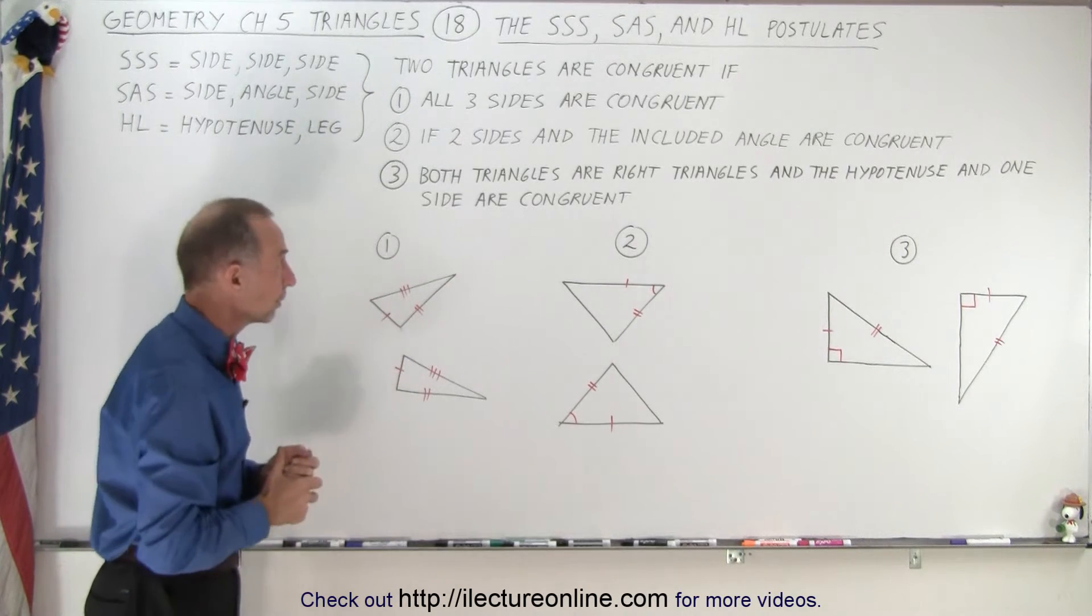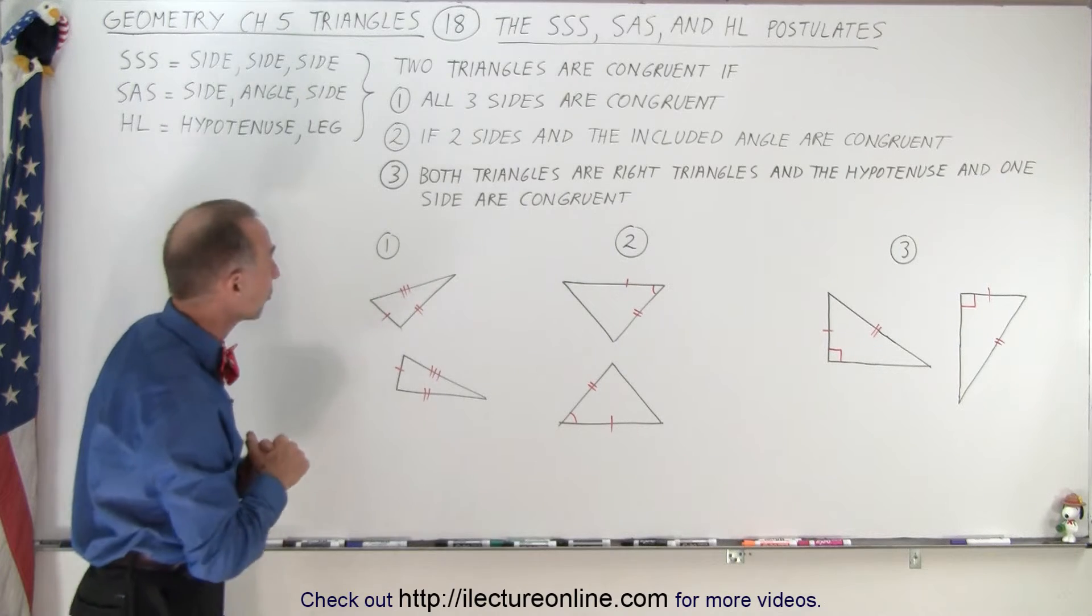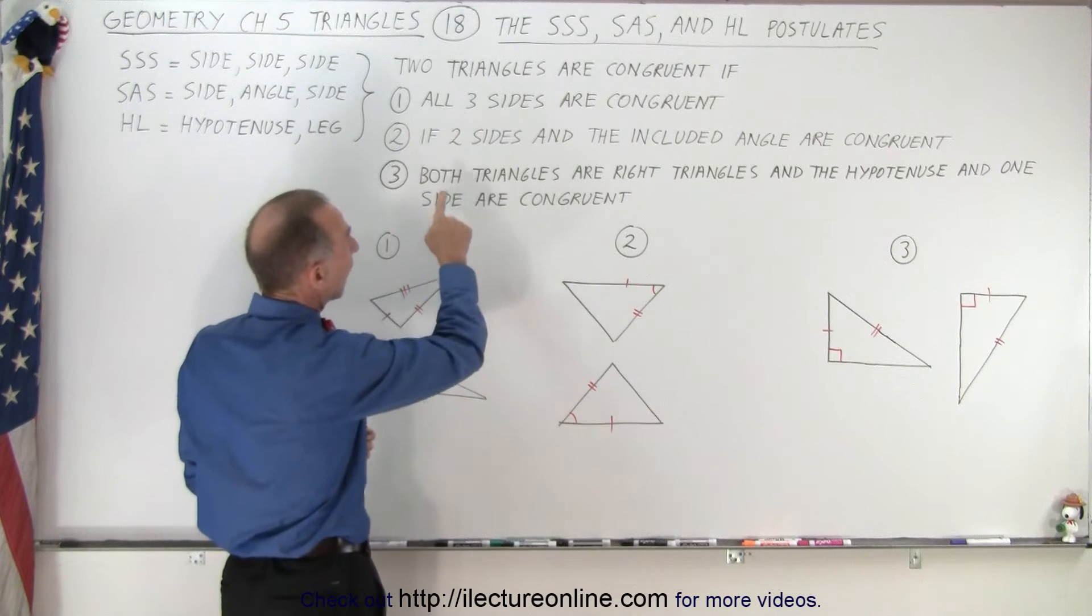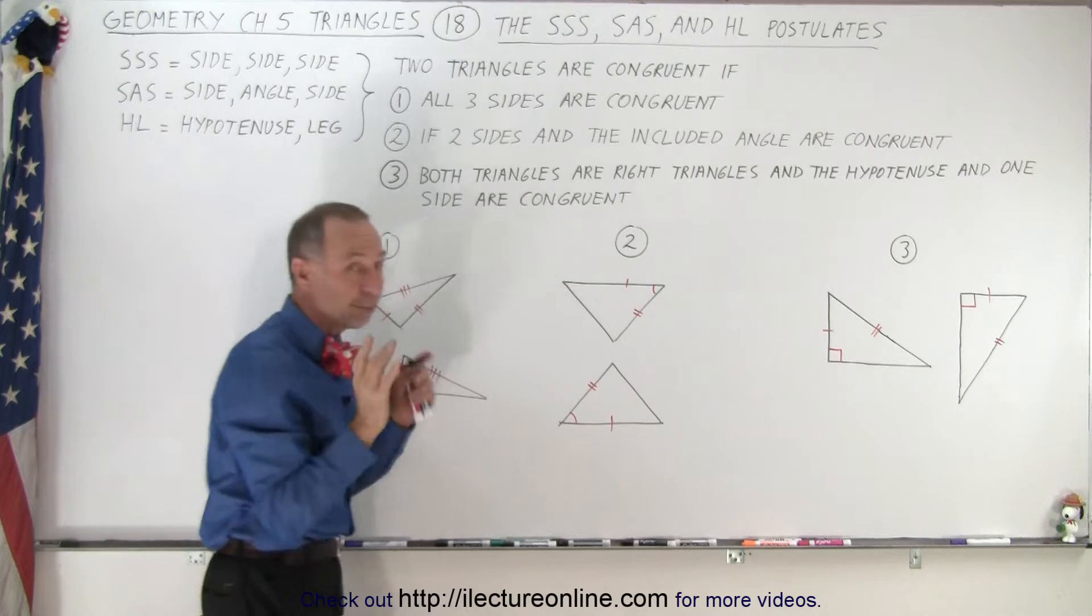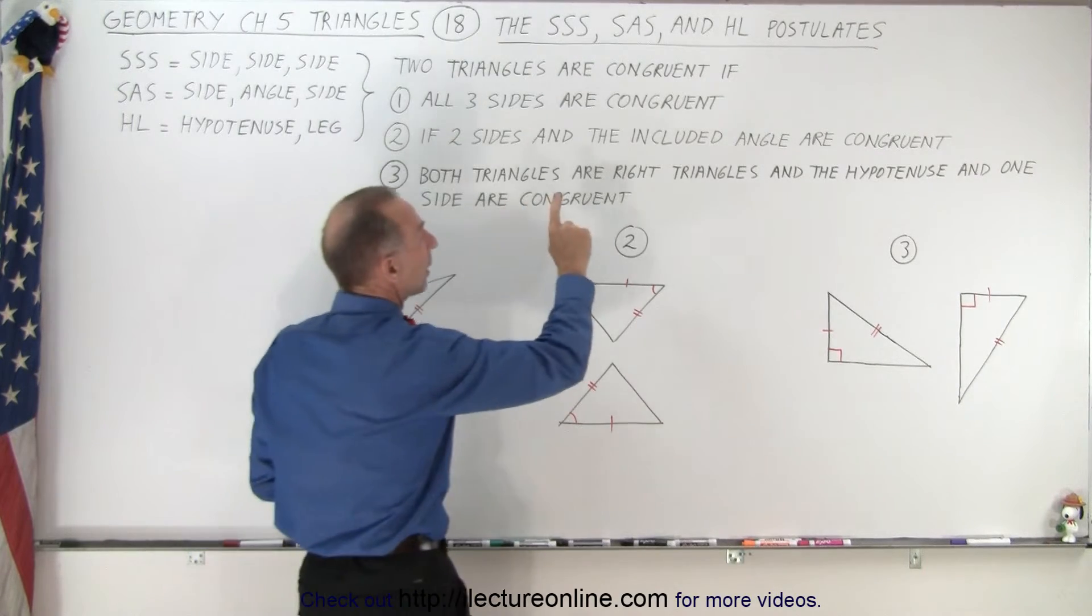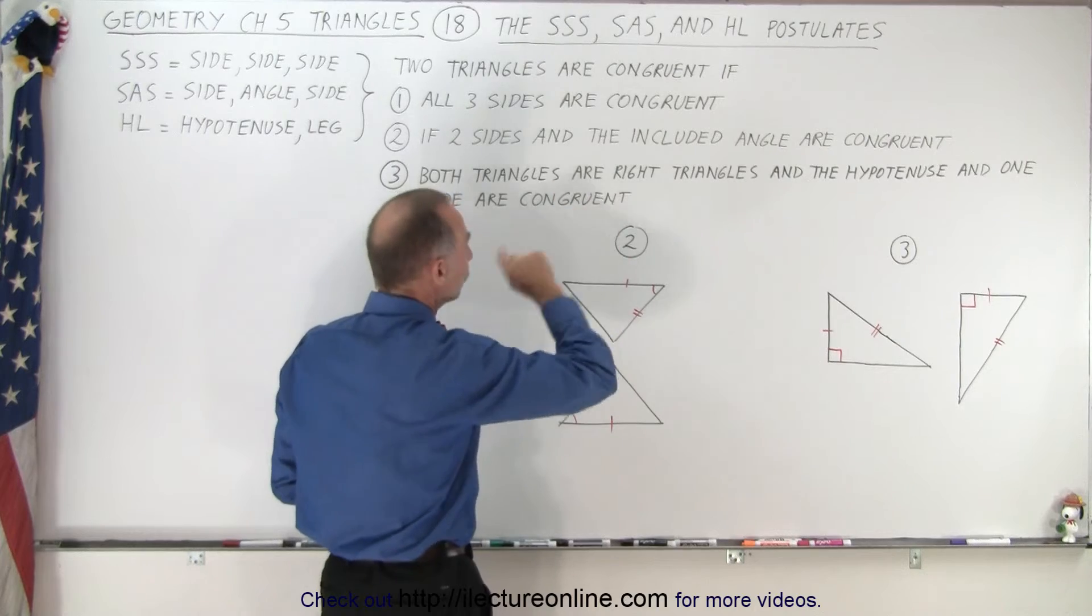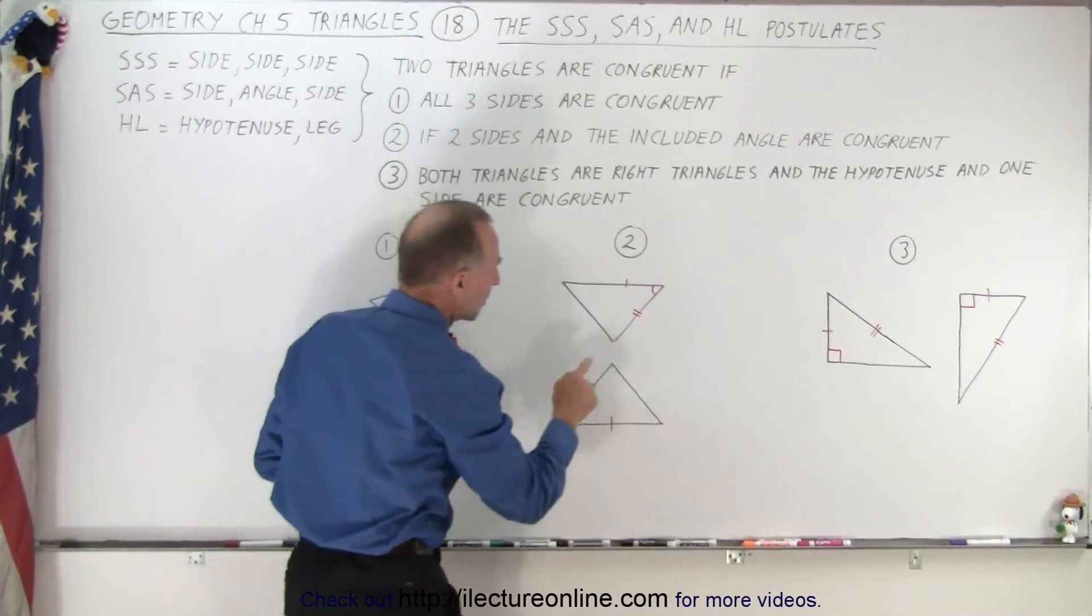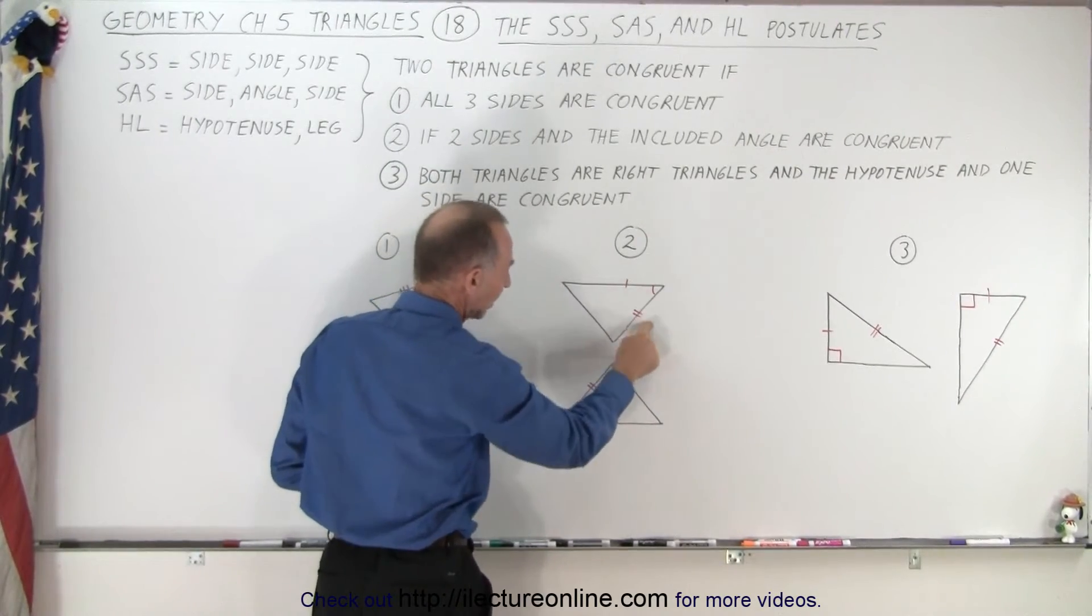The second postulate states that if two sides and the included angle, and that's important, it's the angle between the two sides, if they are congruent, then the two triangles are congruent. So that's what we mean by side, angle, side.